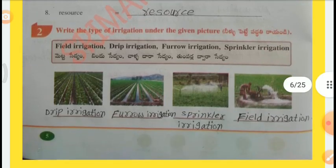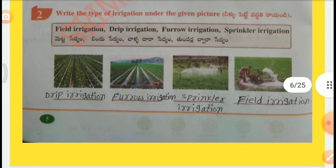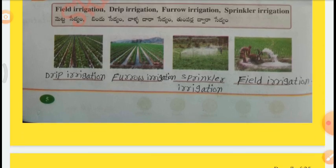Question 2: Rewrite the types of irrigation under the given pictures. Options: Field irrigation, Drip irrigation, Furrow irrigation, Sprinkler irrigation. 1st one is Drip irrigation, 2nd one is Furrow irrigation, 3rd one is Sprinkler irrigation, 4th one is Field irrigation.